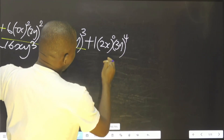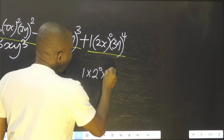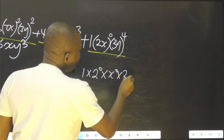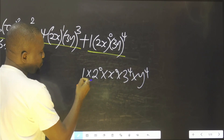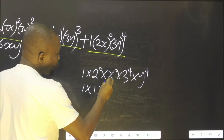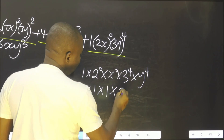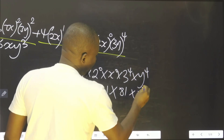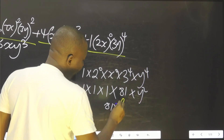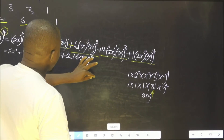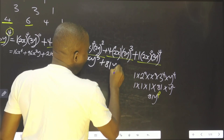Then finally we go for this last one, which is 1 multiplied by 2 raised to the power 0, multiplied by x raised to the power 0, multiplied by 3 raised to the power 4, multiplied by y raised to the power 4. This is 1 times 1 times 1 times 81, times y⁴, which equals 81y⁴.